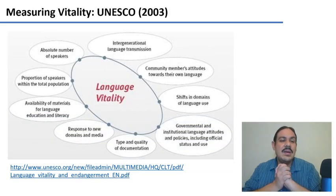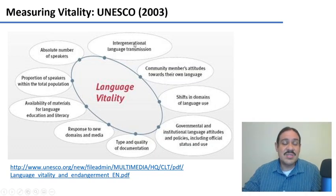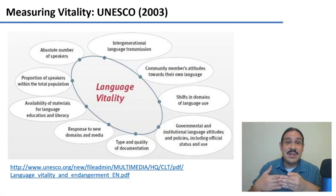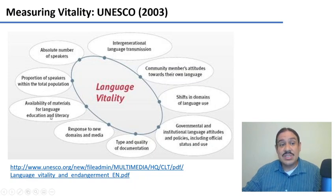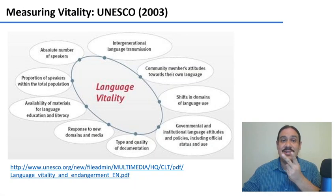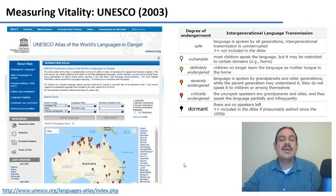If we want to figure out what's happening to a language, we need to measure its vitality. This is not a single number — you have to consider many factors: whether parents are transmitting the language to their children; how the community feels toward its own language — whether it seems useful and valuable for preserving tradition, or whether people want to lay low and forget it; how many speakers there are and their percentage of the total population; whether there are materials for teaching literacy; whether the language is available in new domains like media and technology; and what the attitude of the government is toward the language.